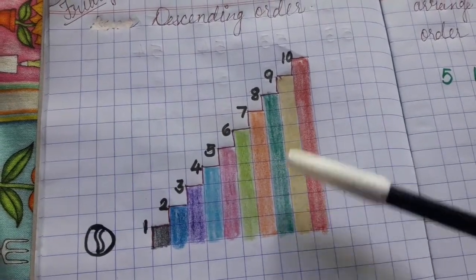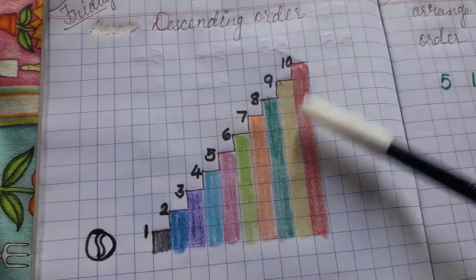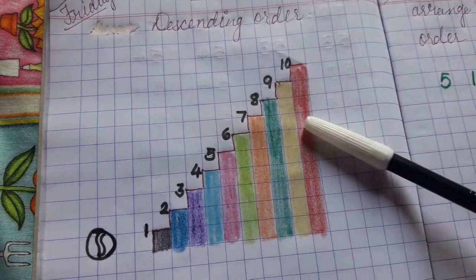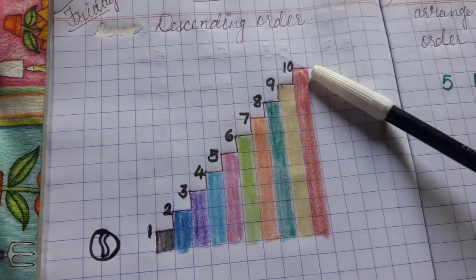We will move from upstairs to downstairs. Each number will be smaller than the previous number as it moves from upstairs to downstairs.